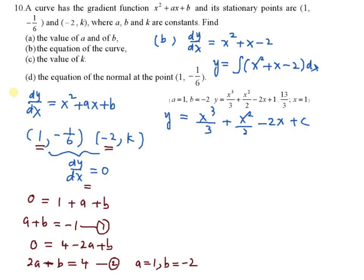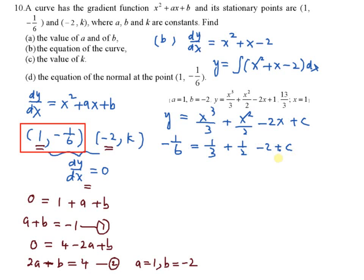Now you substitute one point — you use the point (1, -1/6). That gives negative 1 over 6 equal to 1 over 3 plus 1 over 2 minus 2 plus c. So you get c equal to 1. Therefore, the equation of the curve is y equal to x cubed over 3 plus x squared over 2 minus 2x plus 1.